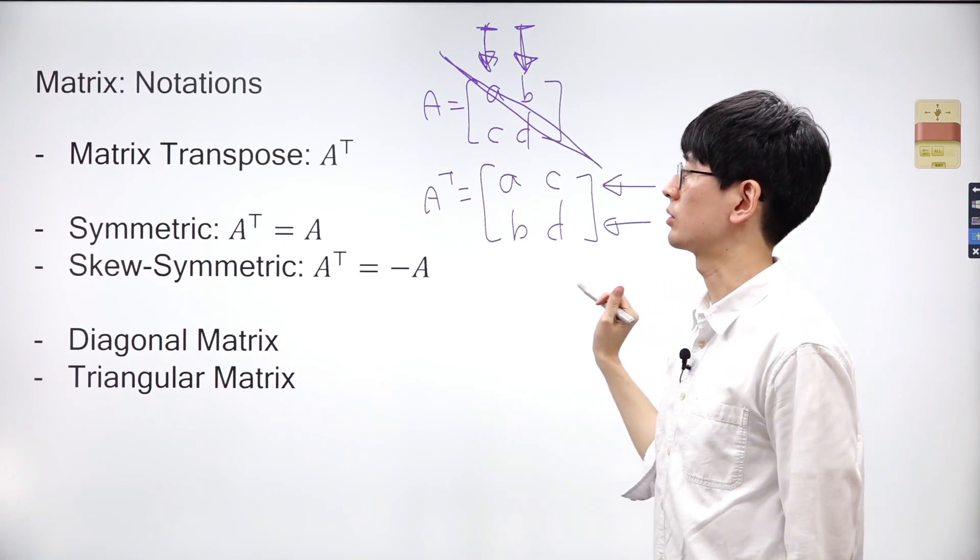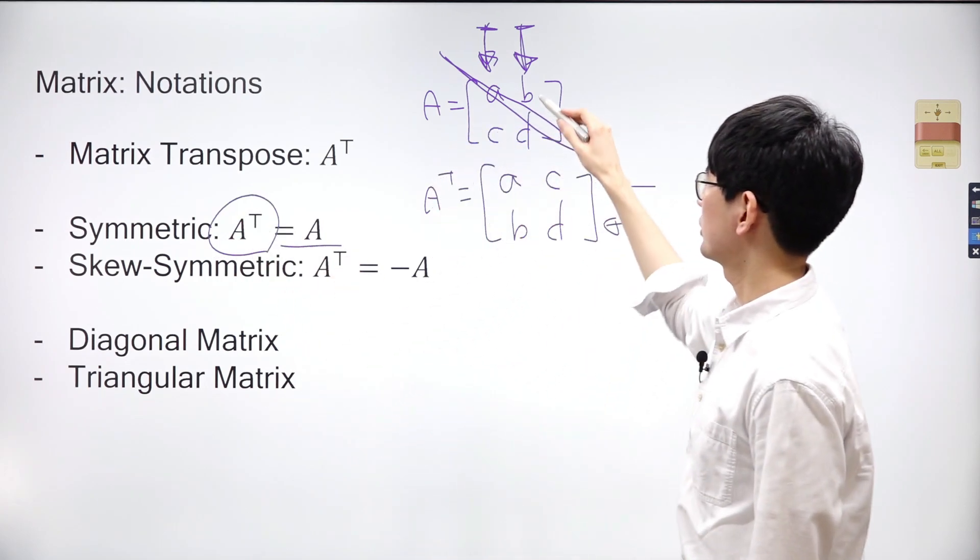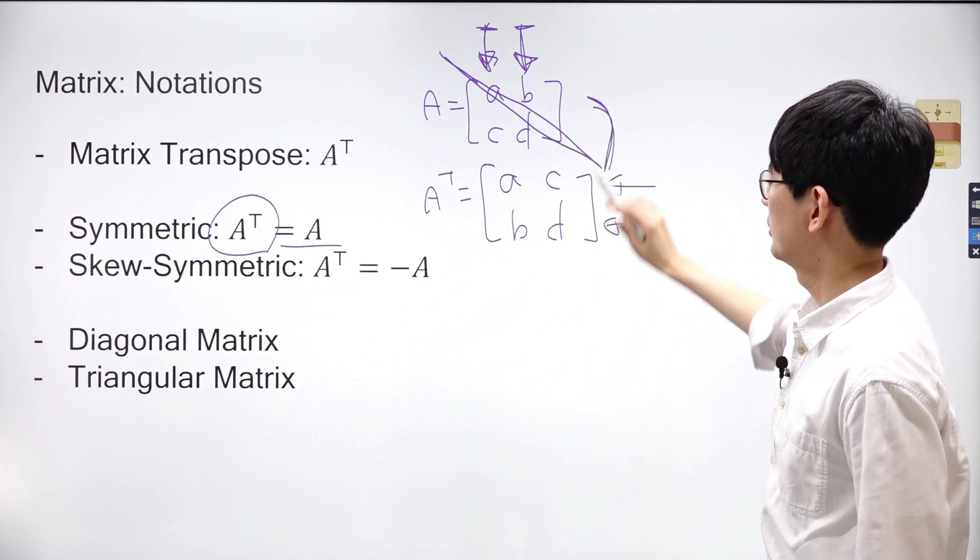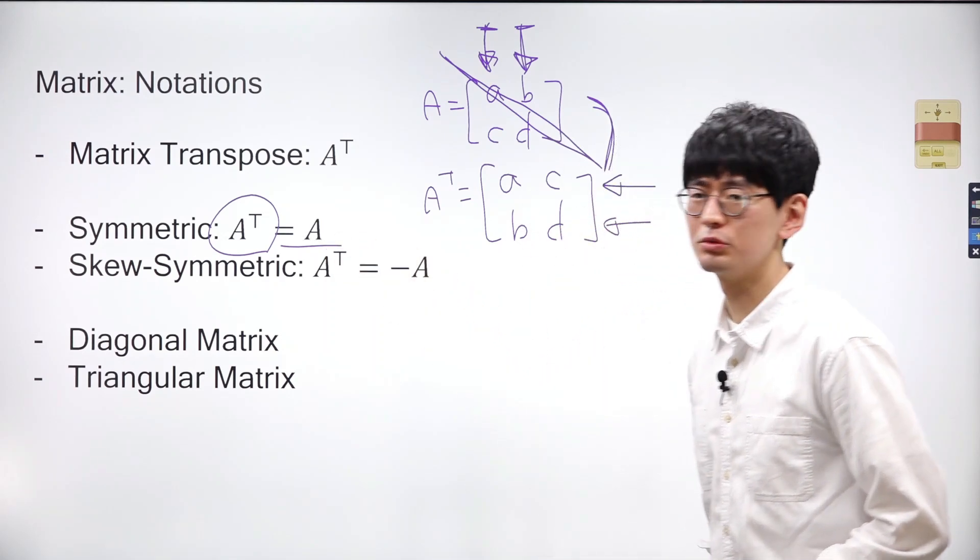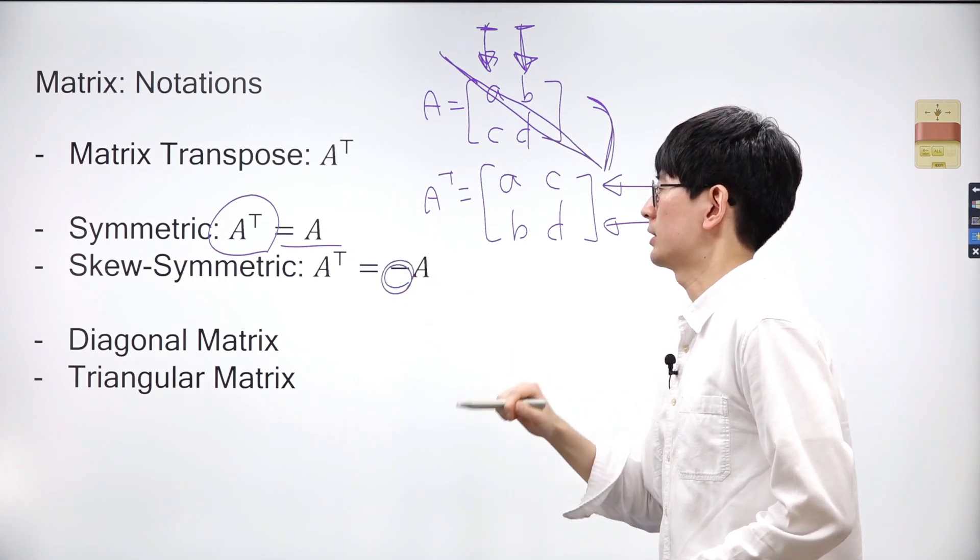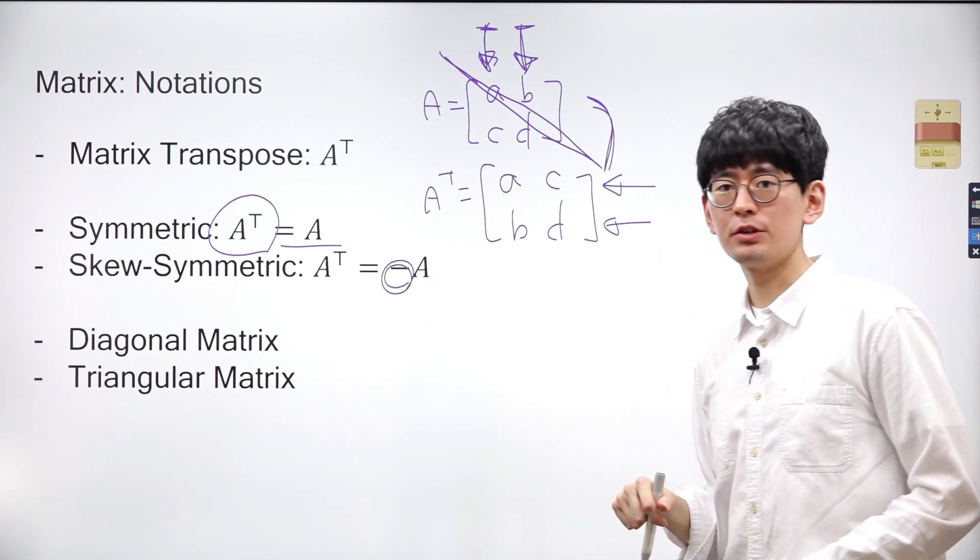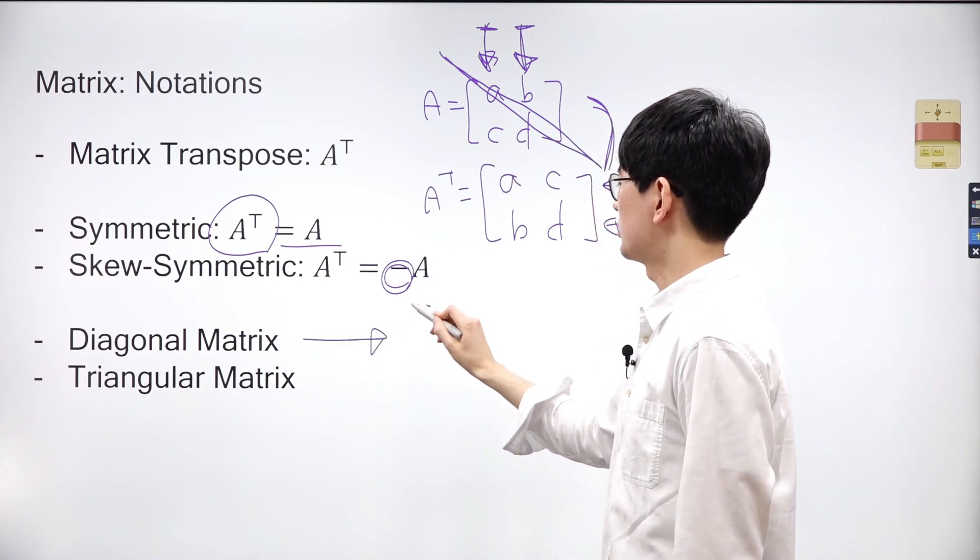If matrix A is equal to its transpose, we refer to the matrix as a symmetric matrix. It's important to note that symmetric matrices always have an equal number of rows and columns. On the other hand, if the transpose of matrix A is equal to its negative, we refer to the matrix as a skew-symmetric matrix.